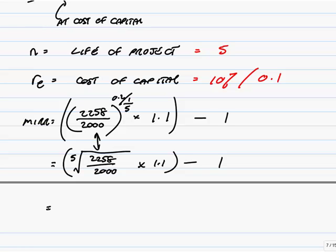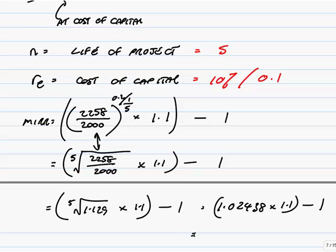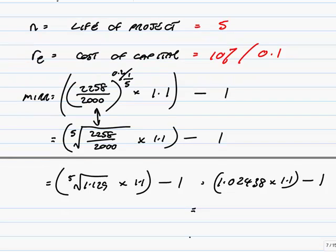It's that times 1.1 minus 1, which I'll write down in bits to make sure it's easy for you to check, but 2,258 divided by 2,000 is 1.129. The fifth root of 1.129 is 1.02438, which gives us finally 0.12638 or 12.68%.